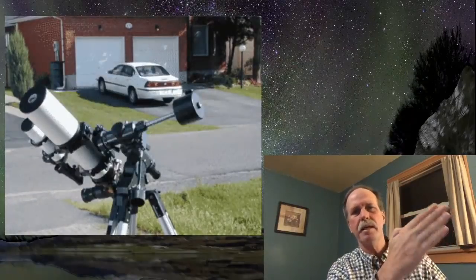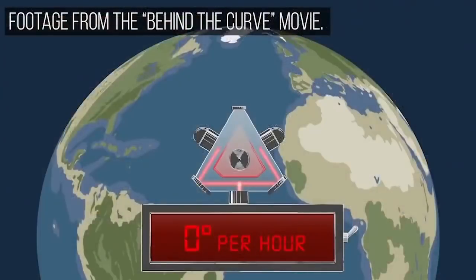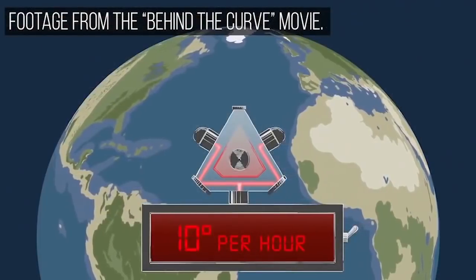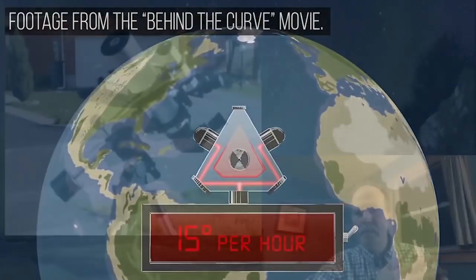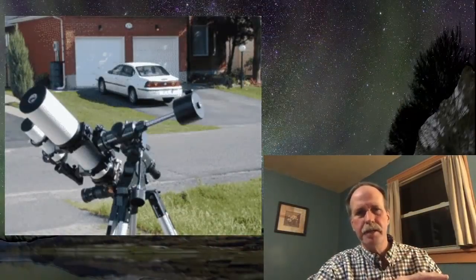It's compensating for the rotation of the earth. How fast does this telescope move in right ascension? A 15 degree per hour drift. 15 degrees per hour. It matches the rotational speed of the earth.